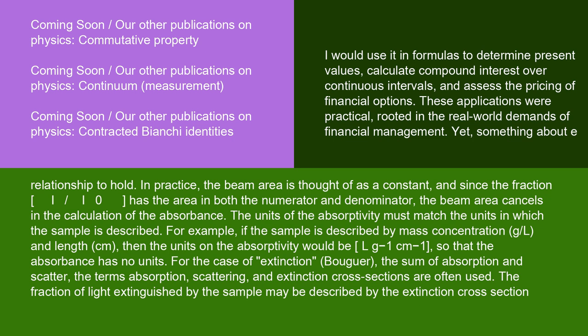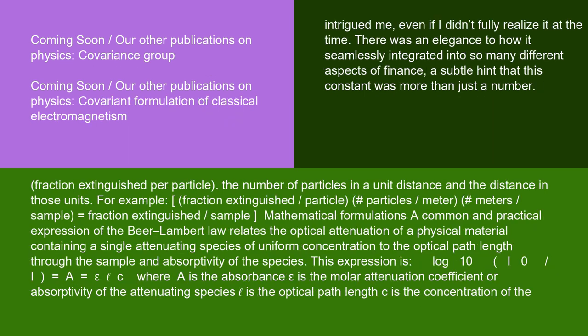For the case of extinction (Bouguer) — the sum of absorption and scatter — the terms absorption, scattering, and extinction cross-sections are often used. The fraction of light extinguished by the sample may be described by the extinction cross-section: fraction extinguished per particle × number of particles per unit distance × distance in those units = fraction extinguished per sample.